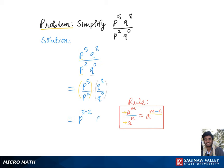Similarly, for this fraction, we'll keep the common base q and raise this to numerator power 8 minus denominator power 0, which gives us the final answer p cubed times q to the 8th.